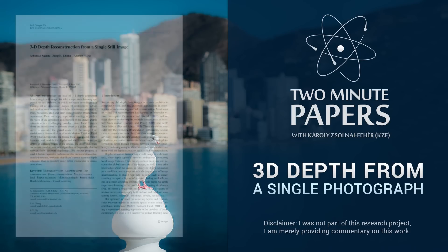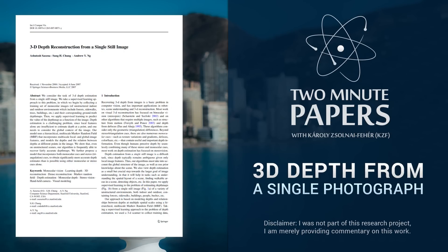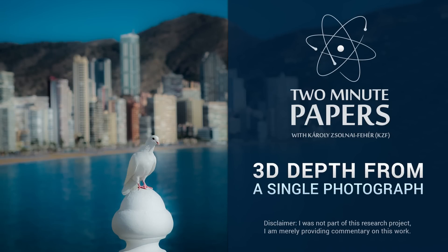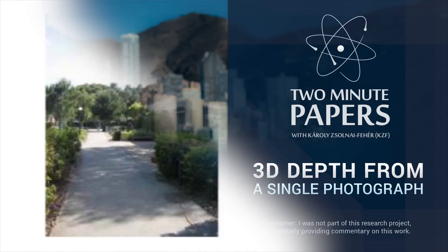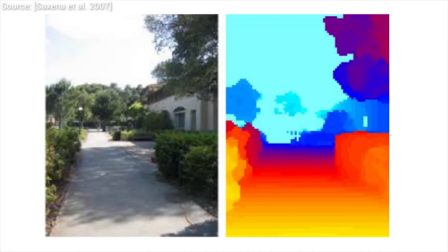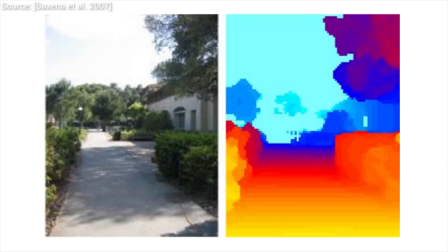Dear Fellow Scholars, this is Two Minute Papers with Károly Zsolnai-Fehér. This piece of work tries to estimate depth information from an input photograph. This means that it looks at the photo and tries to tell how far away parts of the image are from the camera.